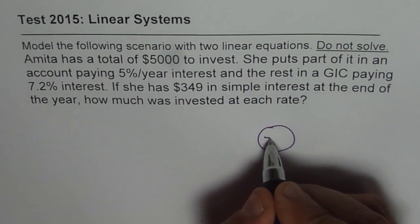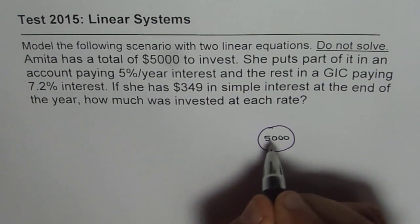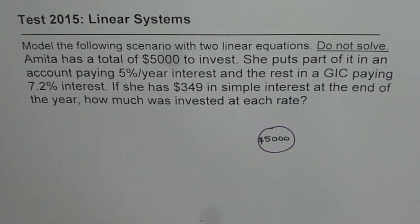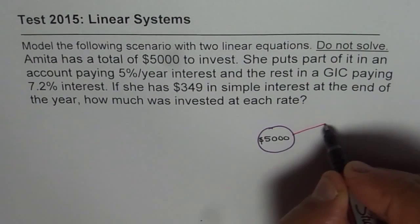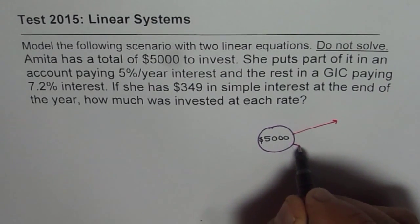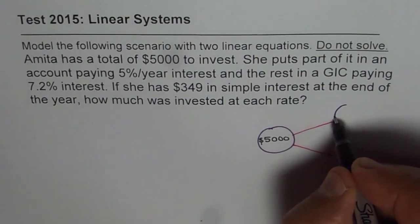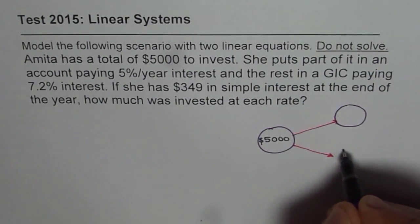What we have here is $5000 with Amita. That is the dollar amount with Amita. What she does is that she invests at two places. Each paying different interest rate. So the investment is done at two places.